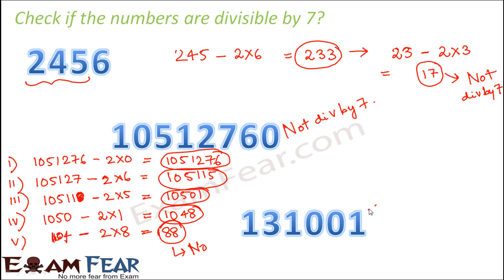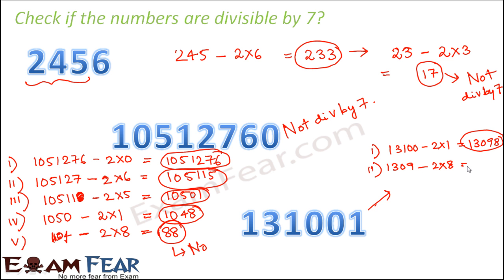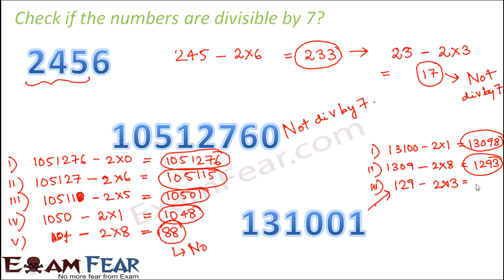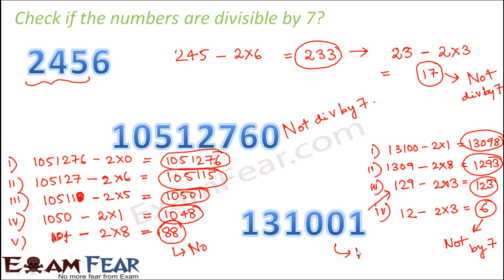Similarly, for 131001: Step 1: 13100 − 2 × 1 = 13098. Step 2: 1309 − 2 × 8 = 1293. Step 3: 129 − 2 × 3 = 123. Step 4: 12 − 2 × 3 = 6. Since 6 is not divisible by 7, the number 131001 is not divisible by 7.